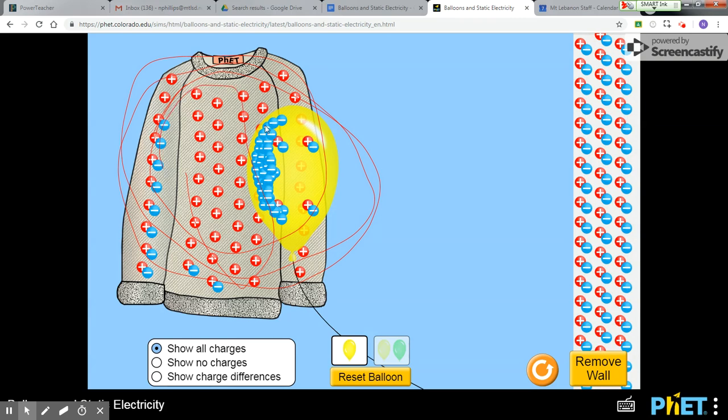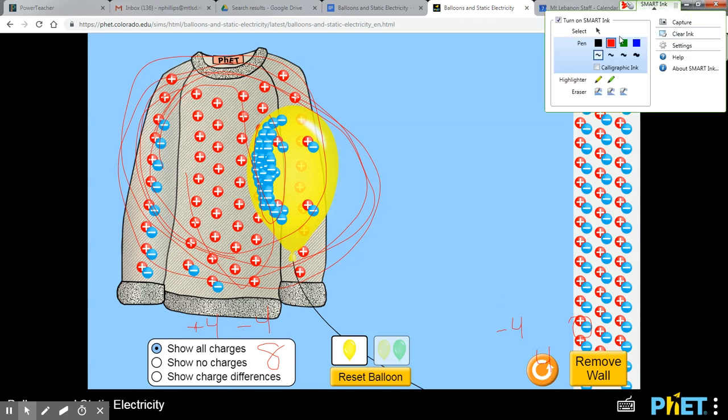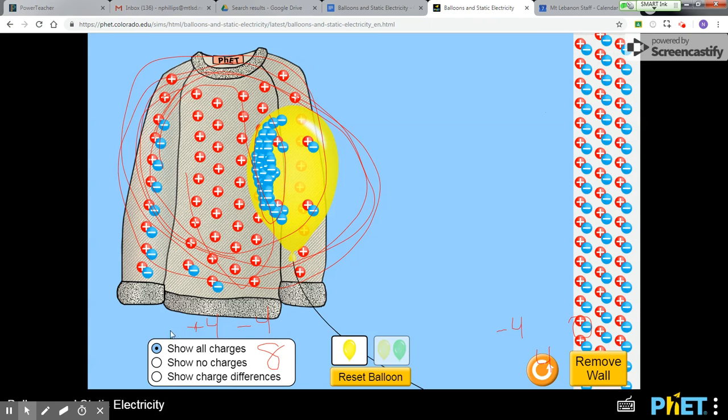There's a much greater difference between say positive four and negative four, as opposed to, let's say between the balloon and the wall, it would be negative four and zero. The difference between negative four and zero is only four. So there's a greater difference in charge between these two. That's a wrap.